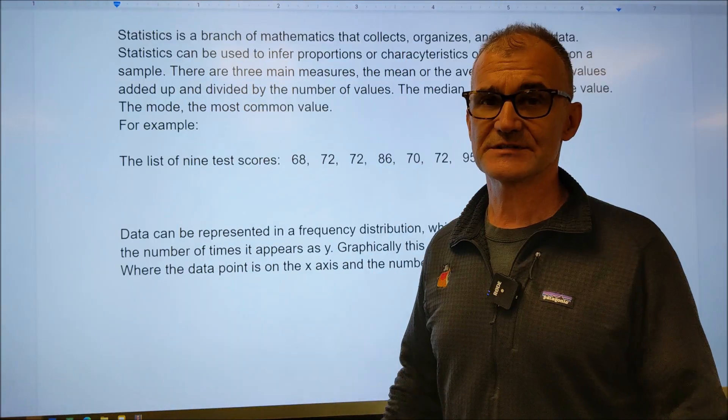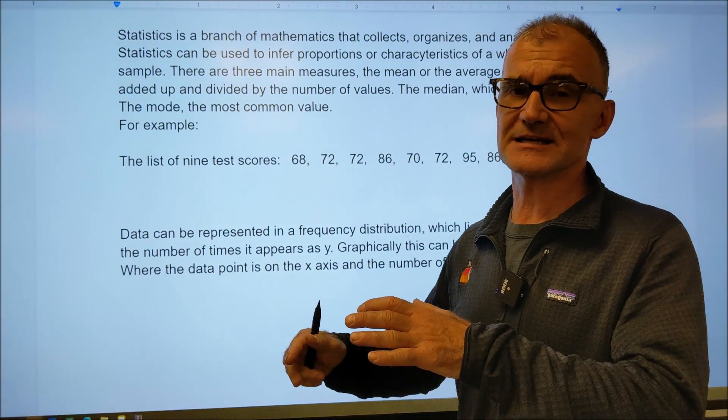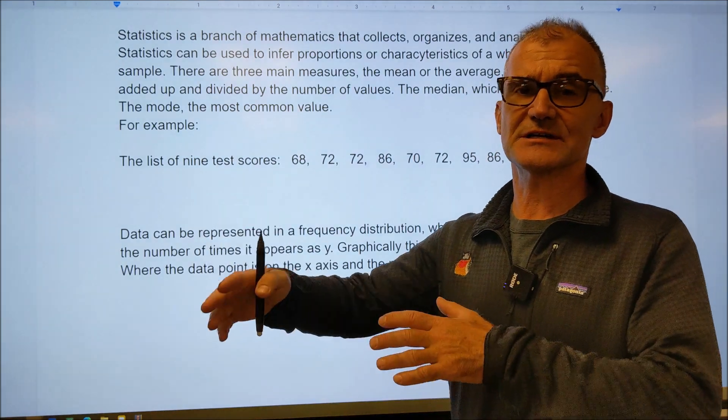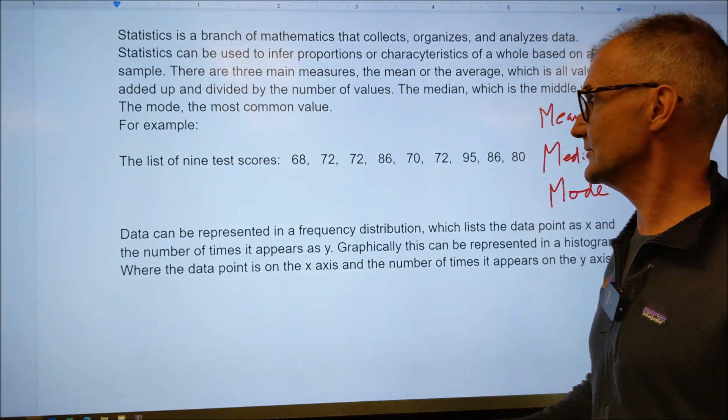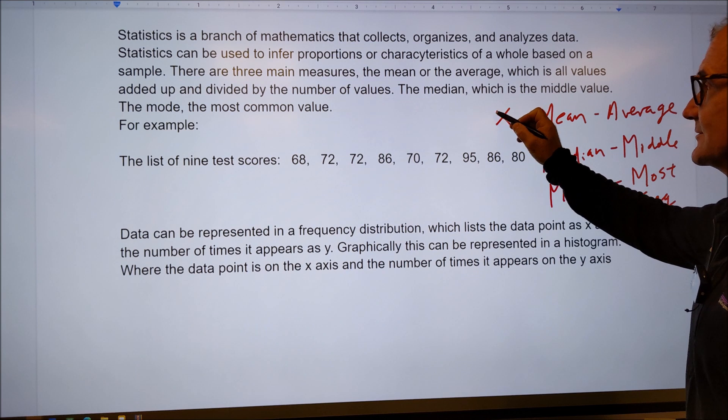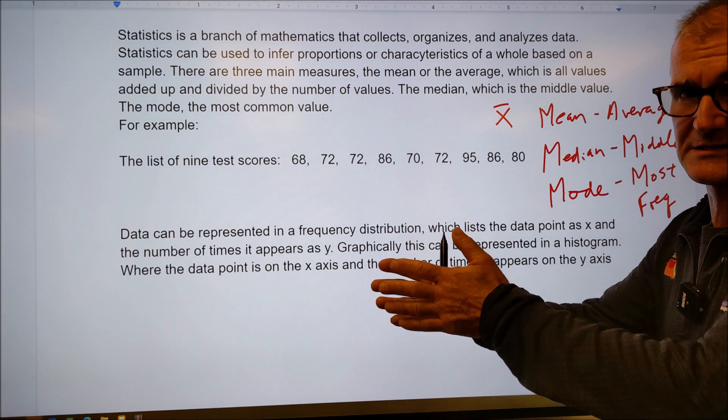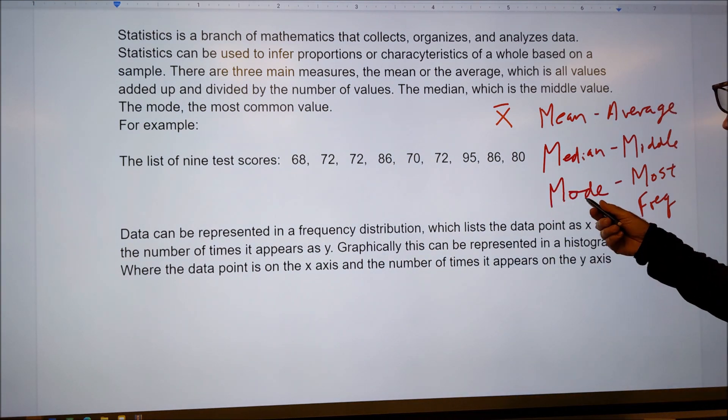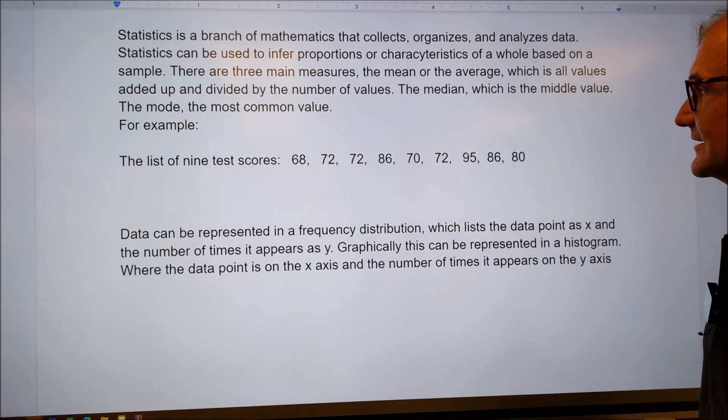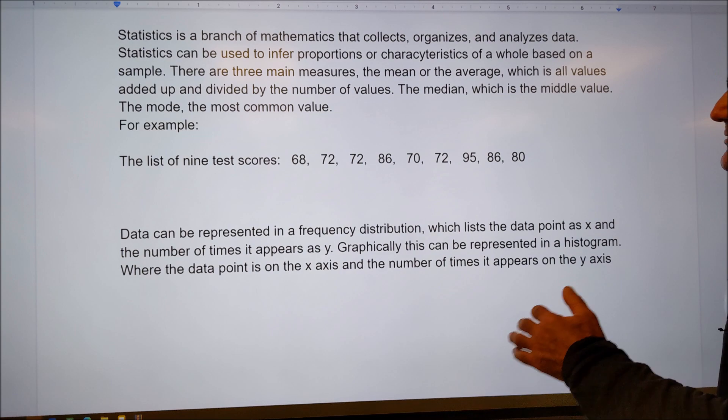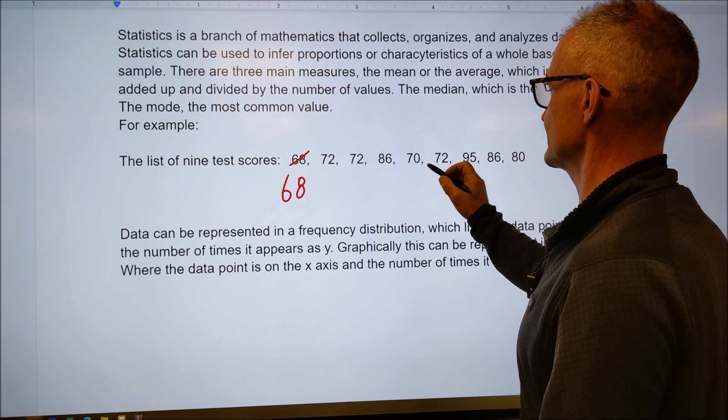All right, let's move on to statistics now. Statistics is just a branch of mathematics that helps organize data and analyze that data. And it allows you to make some inferences on larger populations by looking. Three big words in statistics are the mean, the median, and the mode. The mean is the average, sometimes represented with an x bar in math. The median is the middle number, just like the median on the freeways in the middle of the freeway. The median is the middle number. And then the mode is the one that appears most frequently.